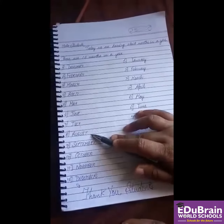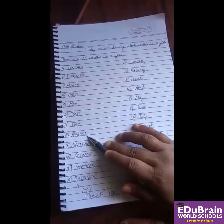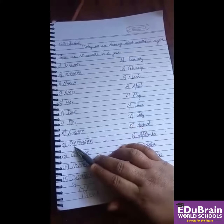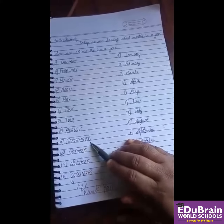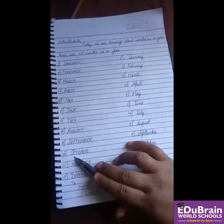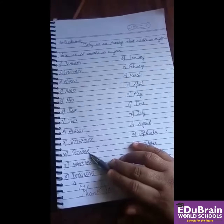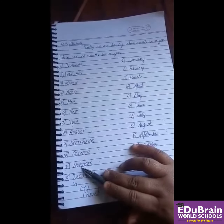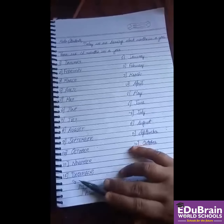August, A-U-G-U-S-T, August. September, S-E-P-T-E-M-B-E-R, September. October, O-C-T-O-B-E-R, October. November, N-O-V-E-M-B-E-R, November.